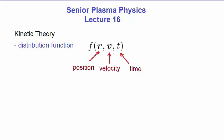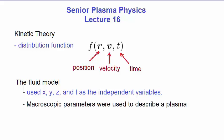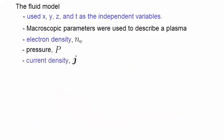Let's see how this contrasts with the Fluid Model. In the Fluid Model, our plasma also depended on position and time, and these were regarded as independent variables. But the Fluid Model could not really handle the motion of individual particles, so macroscopic parameters were used instead. For example, electron density, pressure, current density, temperature, and so on.